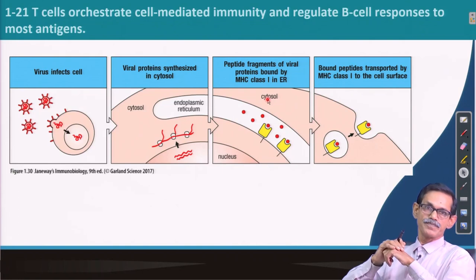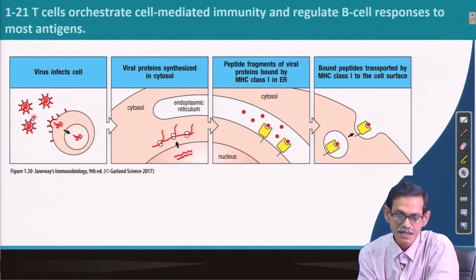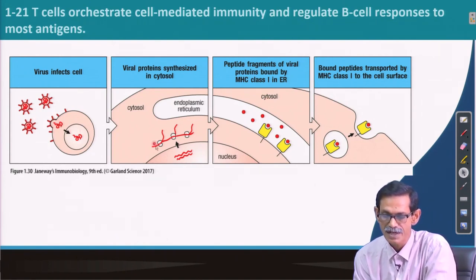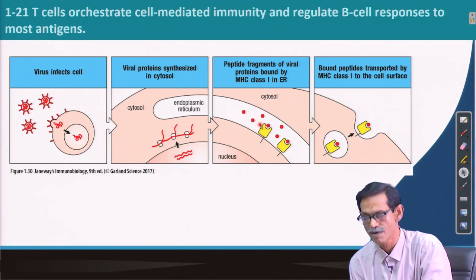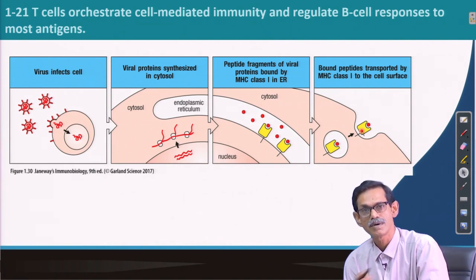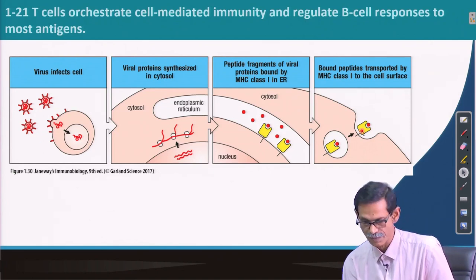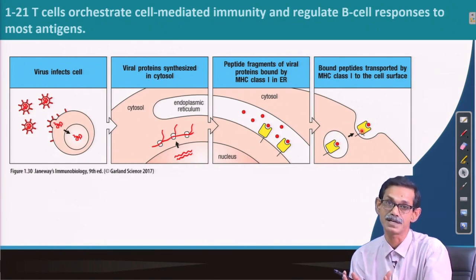This picture we have seen before: a virus infects a cell, viral proteins are synthesized inside, go to the endoplasmic reticulum, fit into MHC 1, and go out to the cell membrane so cytotoxic T cells can see them — the same introductory slide from the beginning of this immunology course. Now we will enlarge and see exactly what is happening.